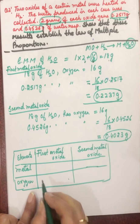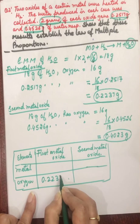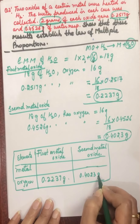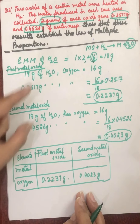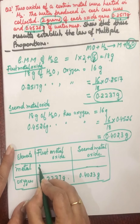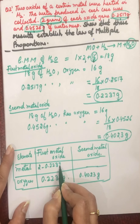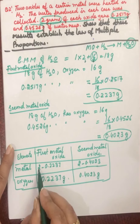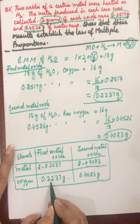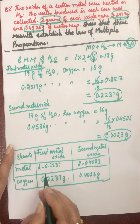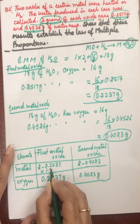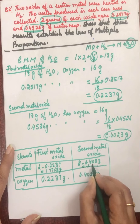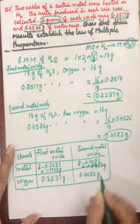Now we need the mass of the metal. We know the mass of the compound, so subtracting the mass of oxygen gives the mass of metal. In the first oxide, oxygen is 0.2237 gram, so metal is 2 minus 0.2237, which equals 1.7763 gram. In the second oxide, oxygen is 0.4023 gram, so metal is 2 minus 0.4023, which equals 1.5977 gram.